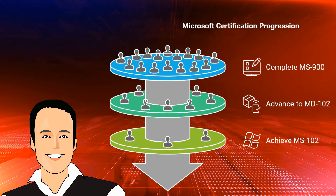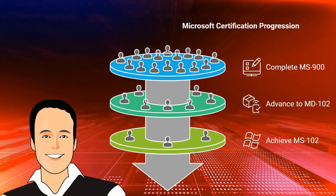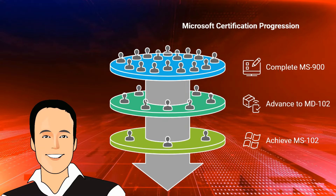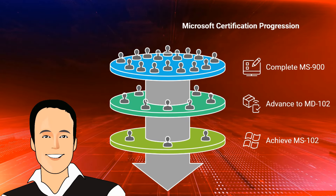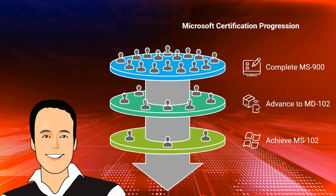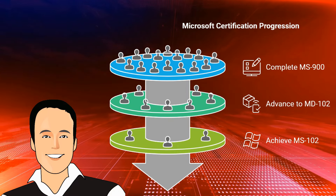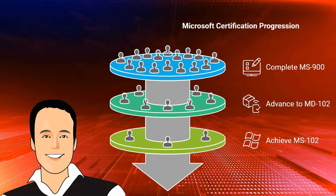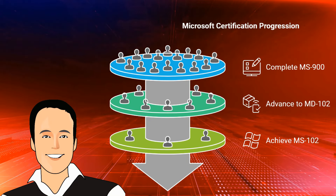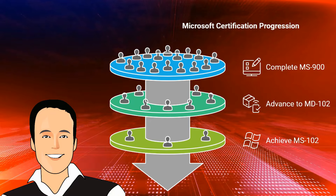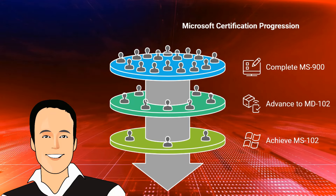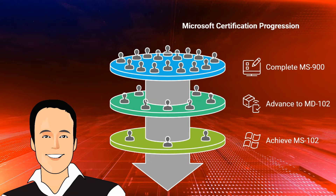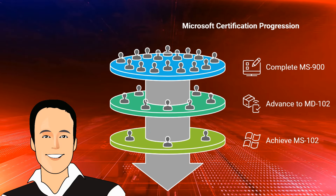To recap the Microsoft 365 path: start with the MS-900 as your beginner-level foundation, then move to the MD-102 at the intermediate level covering device management and administration, and finally the MS-102 for expert-level Microsoft 365 mastery. Don't forget optional side paths like the MS-700 or the SC series security certifications, which can complement both Azure and Microsoft 365.